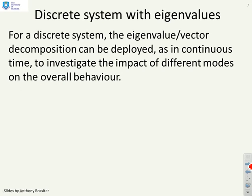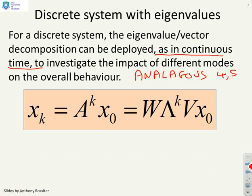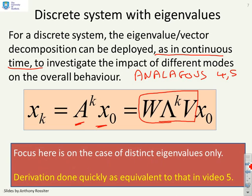For a discrete system, the eigenvalue eigenvector decomposition can be deployed analogously to the continuous time system in order to investigate the impact of different modes on the overall behavior. A key word here is this is going to be exactly analogous to what we did in videos 4 and 5. So, if you've got x_k = A^k x_0, it's straightforward to show that this reduces to a formula like this, WΛ^k V. What we're going to do here is focus on distinct eigenvalues only and do this quickly because it's equivalent to the derivations in 4 and 5.